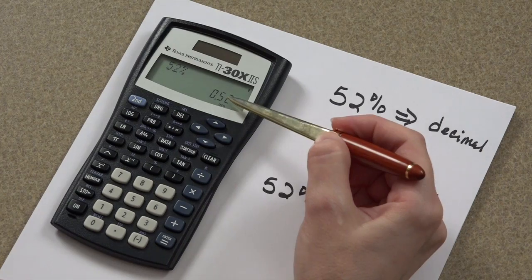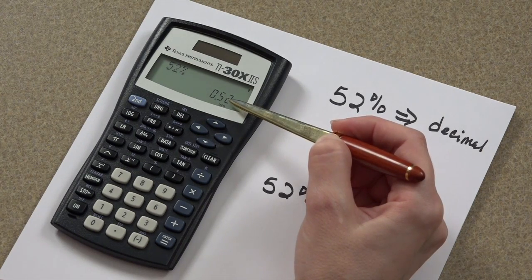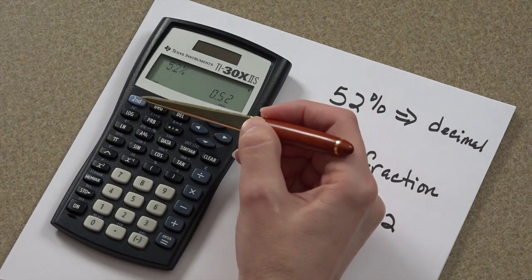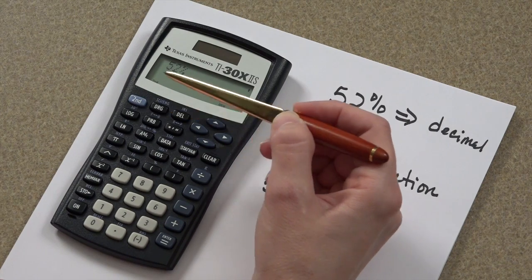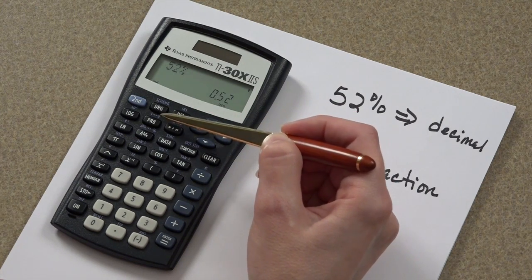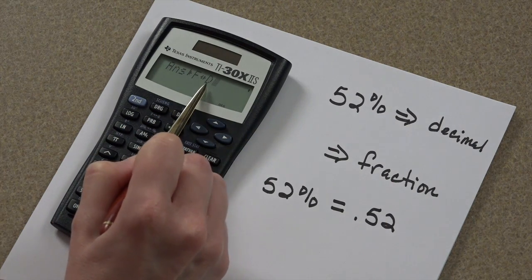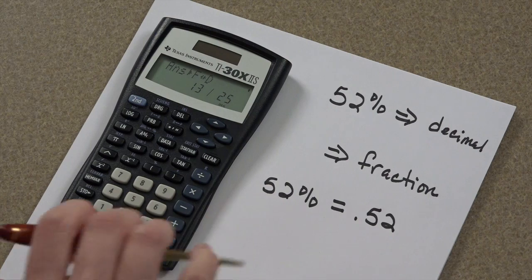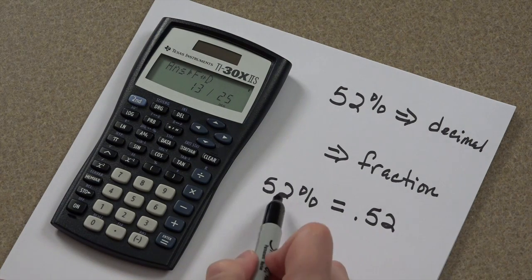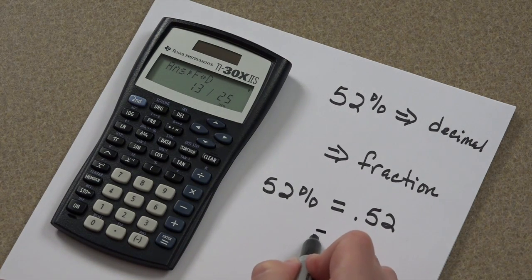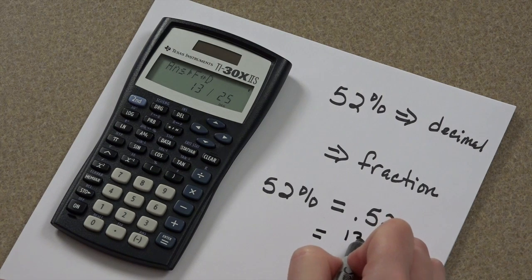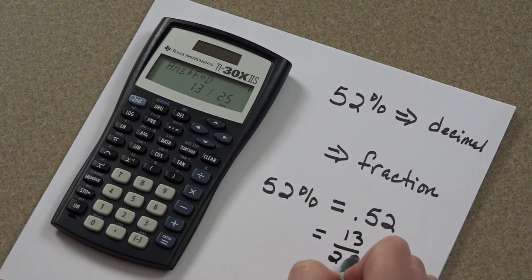Now, if you want to convert this to a fraction, you'll press the second button and your fraction to decimal command. See? That's what your calculator is asking you to do. Press equal and 52% is also the same as 13 over 25.